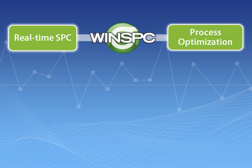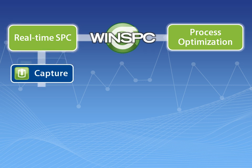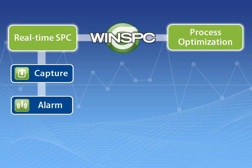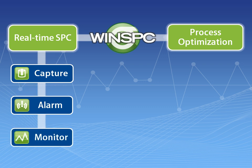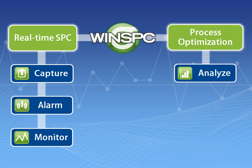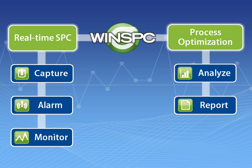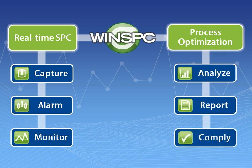You use WinSPC's real-time SPC capabilities to capture production data, alarm on trends and rule violations, and monitor processes across a plant. You use WinSPC's process optimization capabilities to analyze production data, report, and automate much of what it takes to comply with regulations and customer requirements.